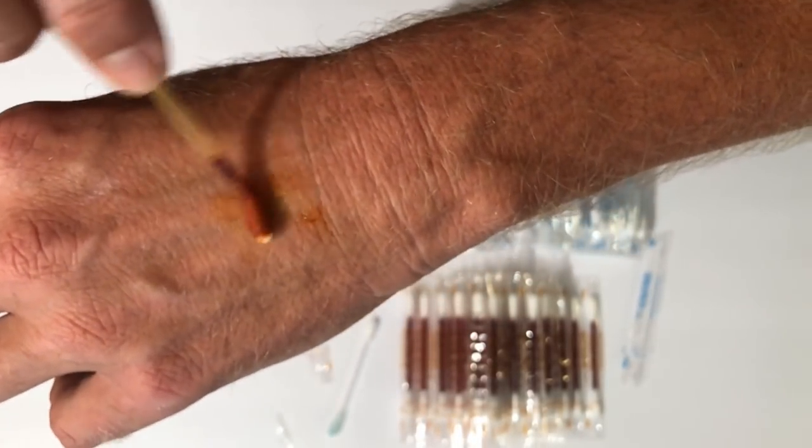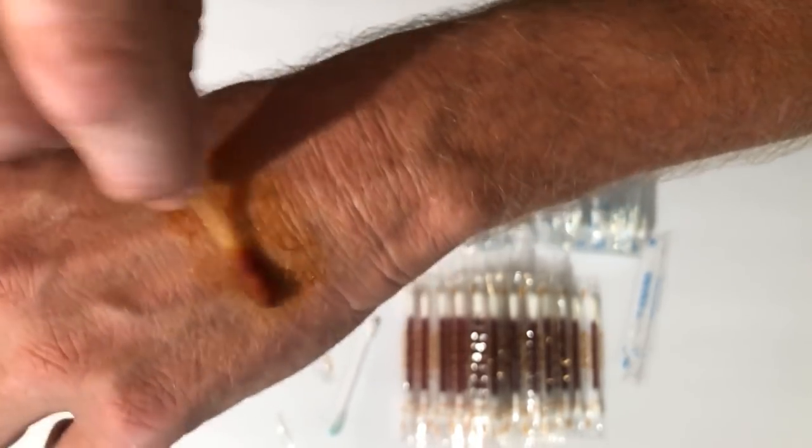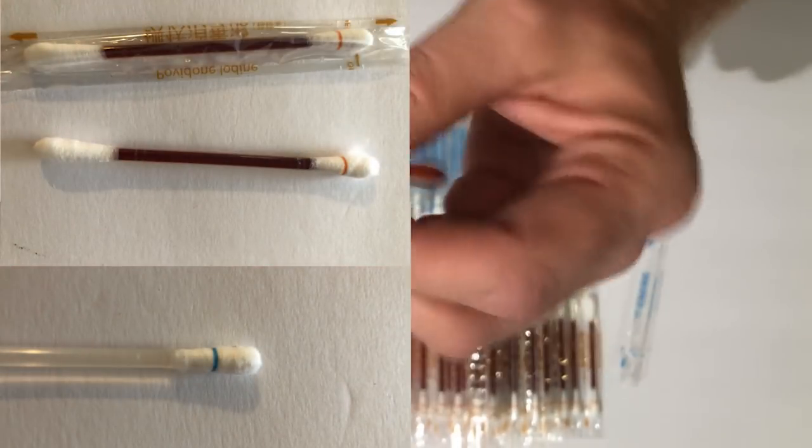So you can dispense the product with the broken side here, cover the area, the exposed area, and then you still have the other side that you can come back and wipe off the excess with.